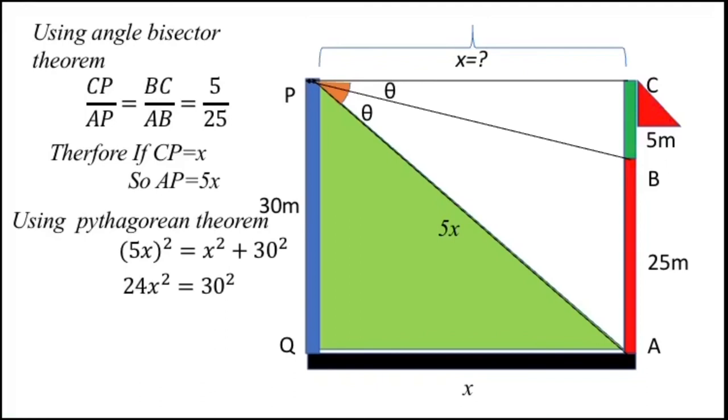Taking the square root of both sides, x = 30/√24. On rationalizing the denominator and arranging the terms, x = 5√3/2. So our answer is 5√3/2.